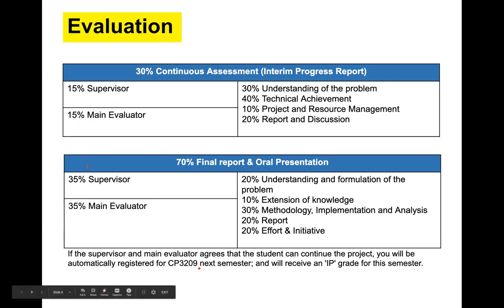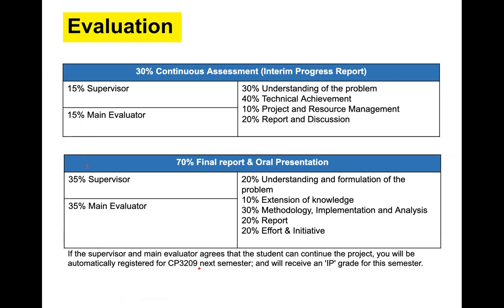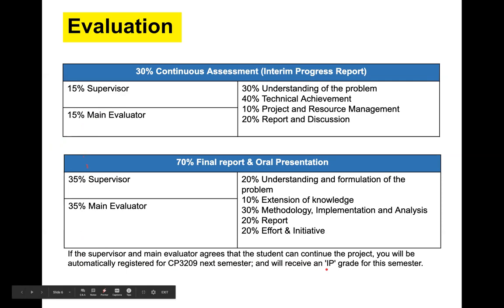You are registered for CP3209, a single course module serving you for both semesters. In the first semester, after completion, you will get an 'IP' (in progress) grade, which will revert to your actual grade at the end. You have eight MCs allocated for the whole year and receive a single letter grade for that.